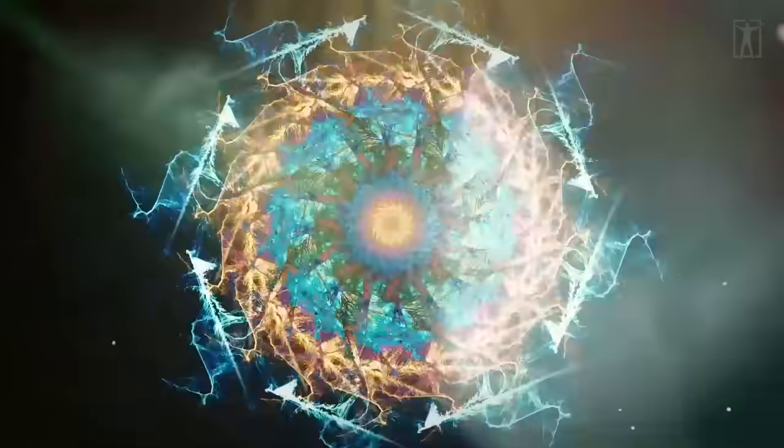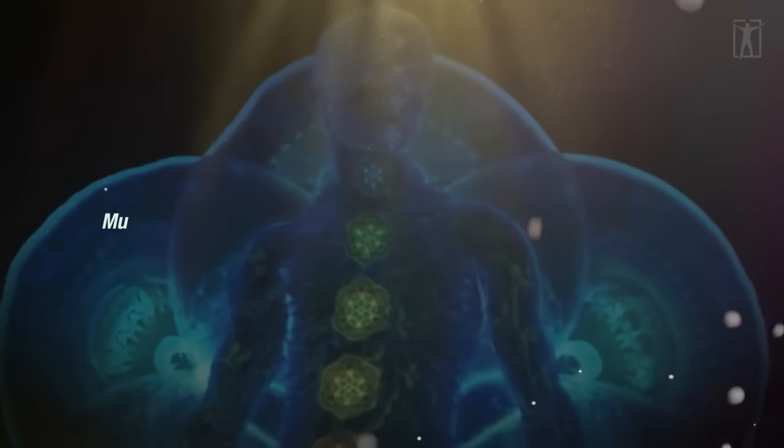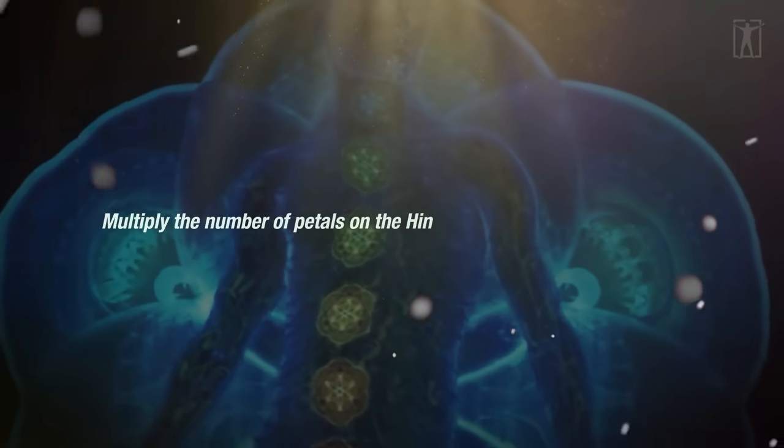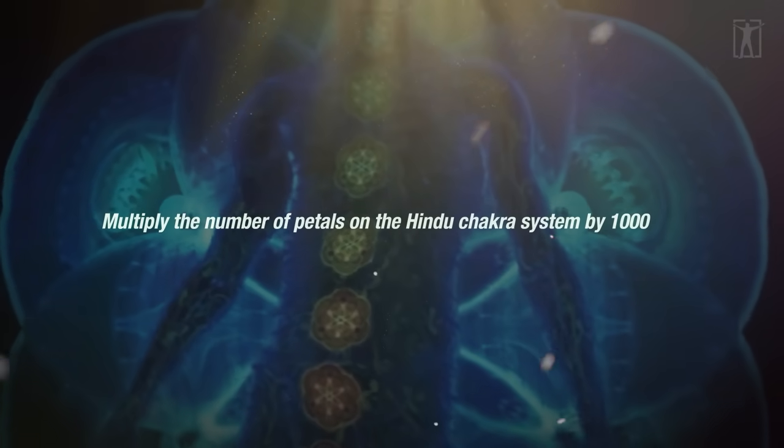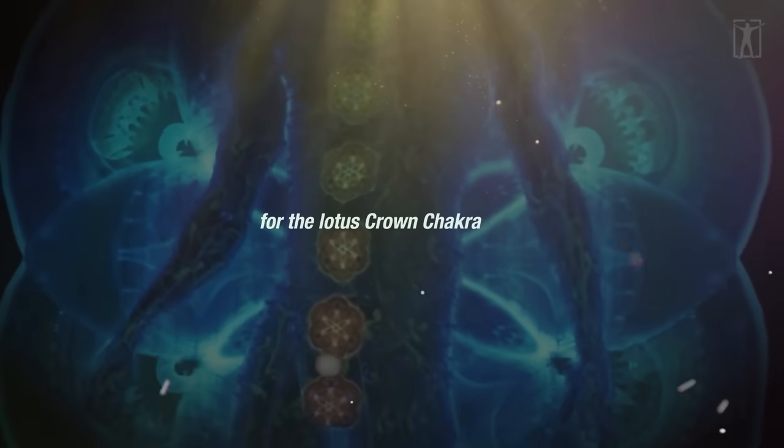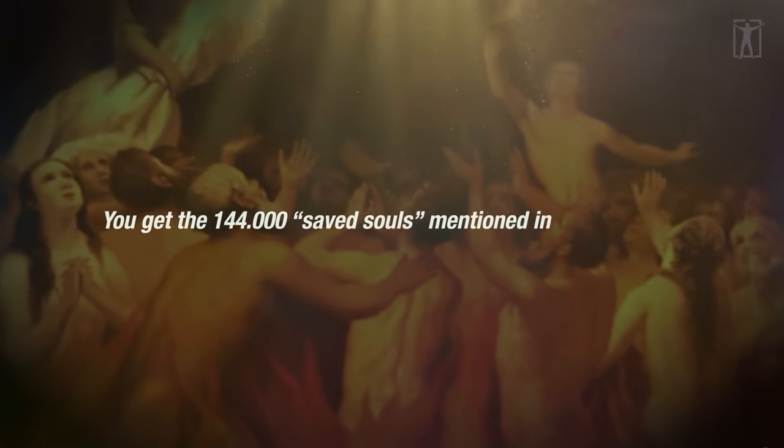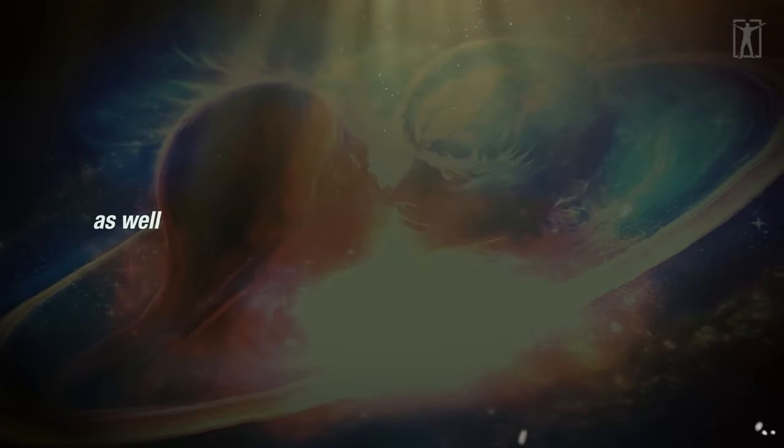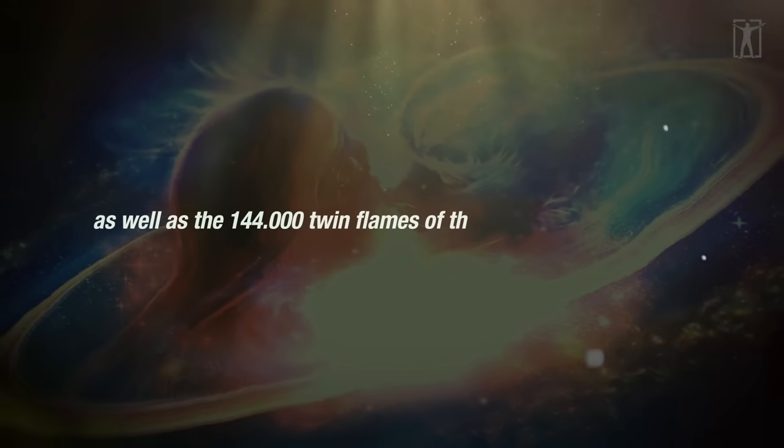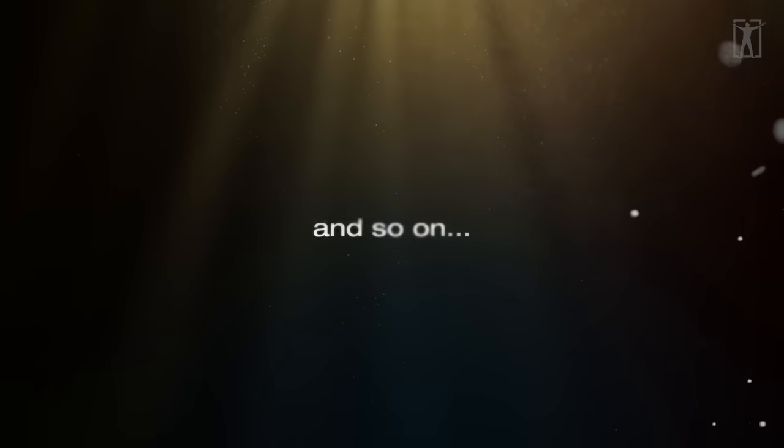The seed enters the solar plexus and ascends all 33 vertebrae, bursting each chakra along the way. Multiply the number of petals on the Hindu chakra system by 1,000 for the lotus crown chakra. You get the 144,000 saved souls mentioned in the Bible, as well as the 144,000 twin flames of the New Age movement.